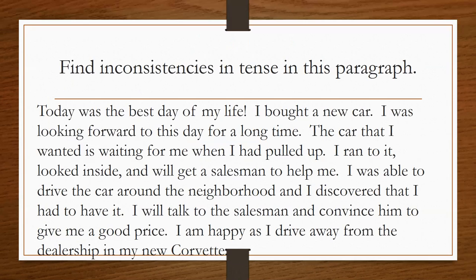Let's look sentence by sentence. 'Today was the best day of my life' — 'was' is past tense. 'I bought a new car' — also past tense. 'I was looking forward to this day for a long time' — past tense. The first three sentences are consistent. Then: 'The car that I wanted' — past tense — 'is waiting' — present tense. That's the first inconsistency. We could change 'is waiting' to past tense to maintain consistency with 'when I had pulled up.'